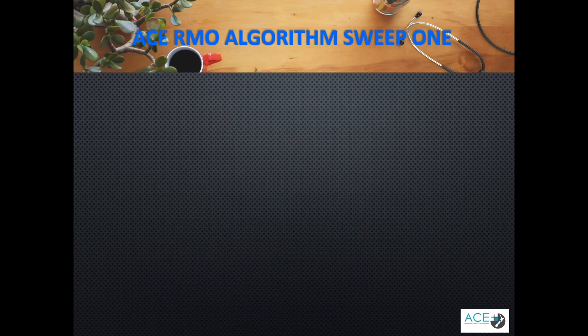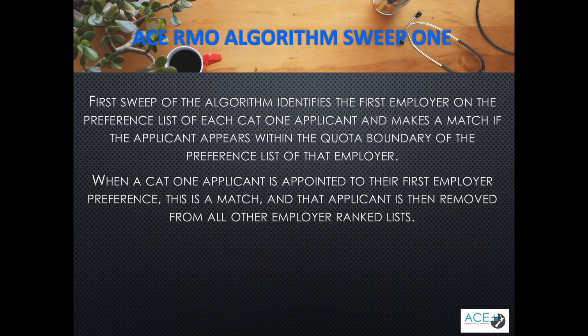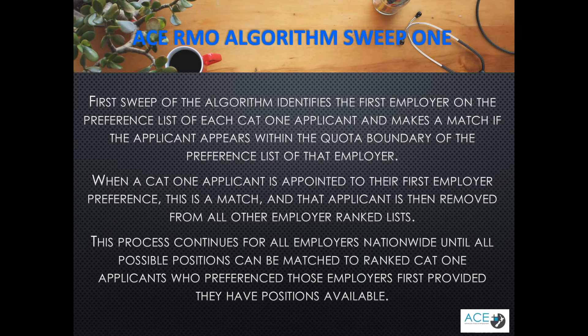The algorithm works one DHB at a time. It starts at the top of the list of ranked names asking how many positions each DHB have. In the first sweep, it runs from top to bottom matching applicants to that DHB, provided that they preferenced it first and the DHB has positions to fill. When an applicant is matched, they are removed from any other DHB ranked list to ensure that they are only matched to one DHB. The algorithm will then move on to the next DHB and match applicants to that DHB provided they ranked it first and the DHB still has positions available.